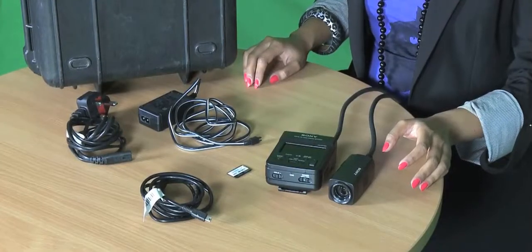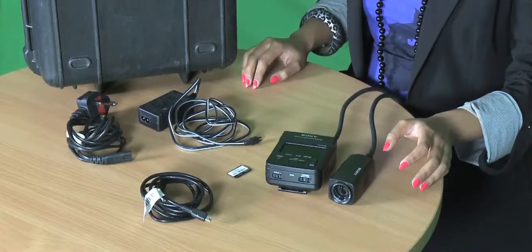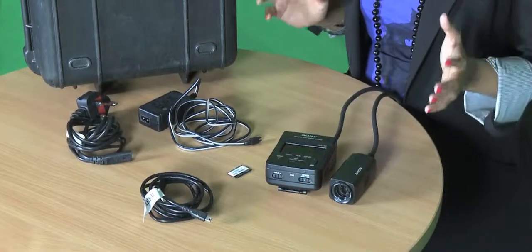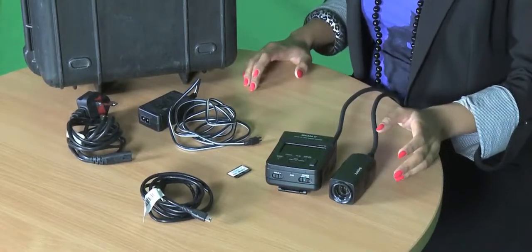In the Peli case, you're going to have the MC1 itself, the battery, a memory card, a USB lead, and the charging units as well.